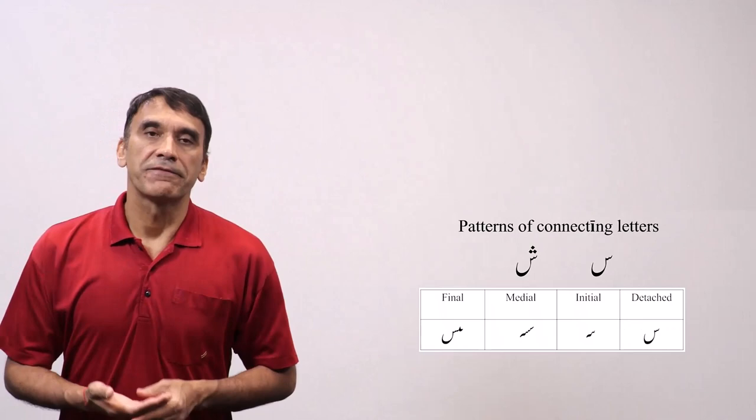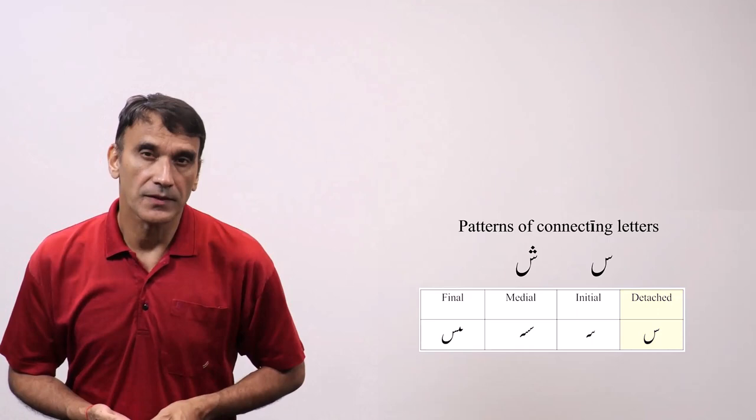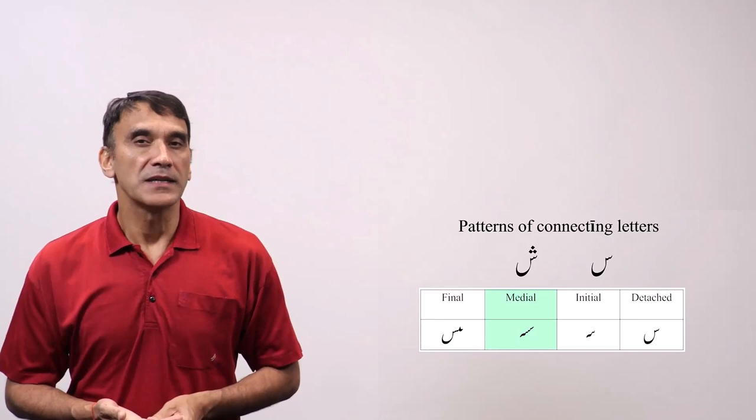Let's take the different forms of the letter seen. The detached form is the one as in the alphabet sheet. The initial form is this. It looks like the first part of the letter.